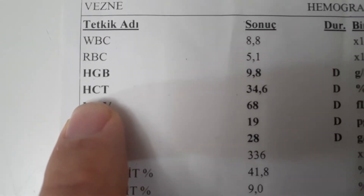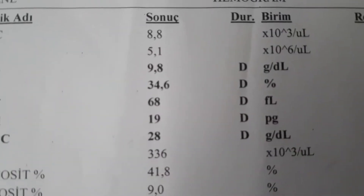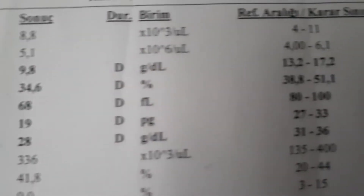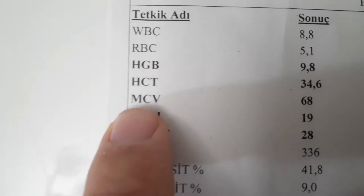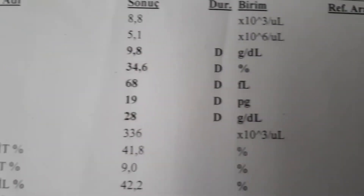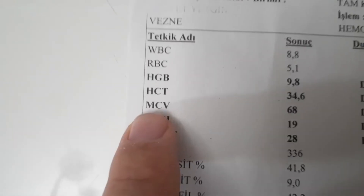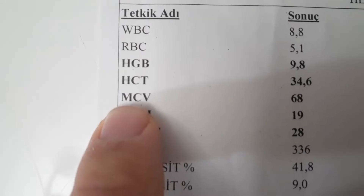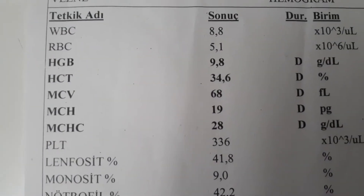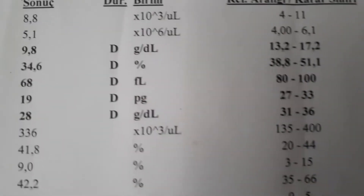Hemoglobin, erythrocyte count, and hematocrit usually rise and fall together — their low levels generally indicate anemia. MCV means mean corpuscular volume, indicating the mean diameter of erythrocytes. A high MCV means your erythrocytes are larger than normal but there is still anemia. The reasons can be B12 deficiency, folic acid deficiency, chemotherapy, or spleen and liver disease.